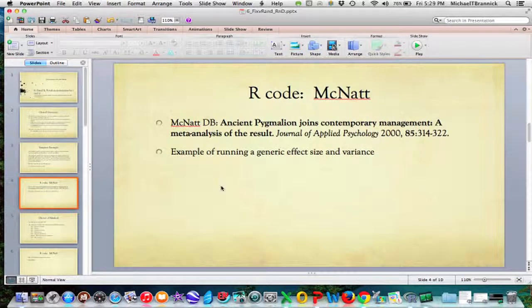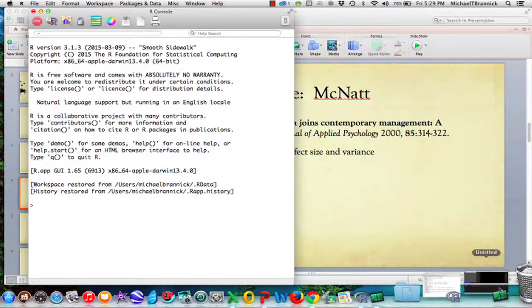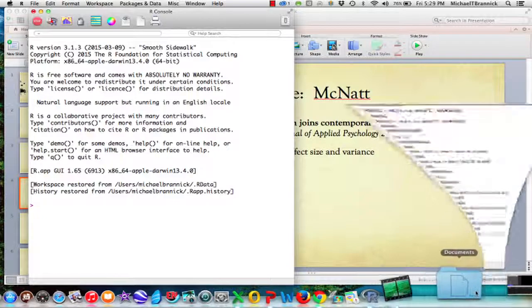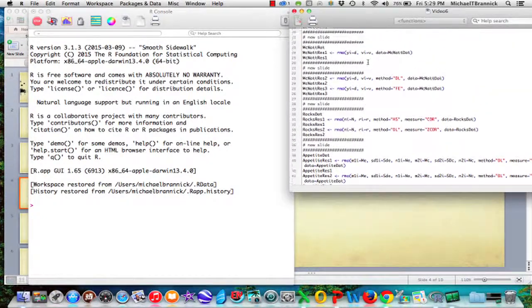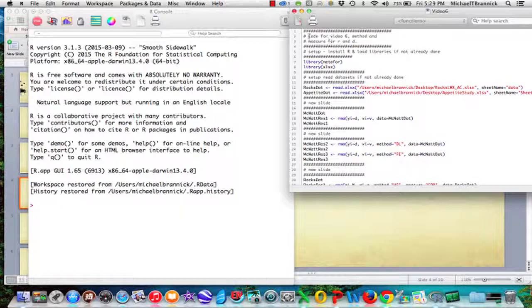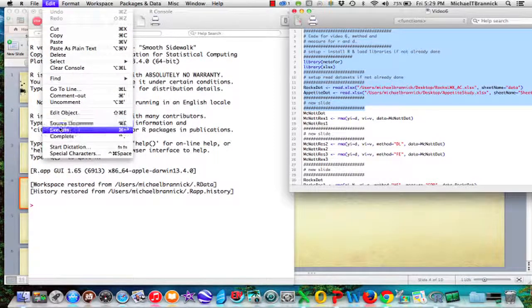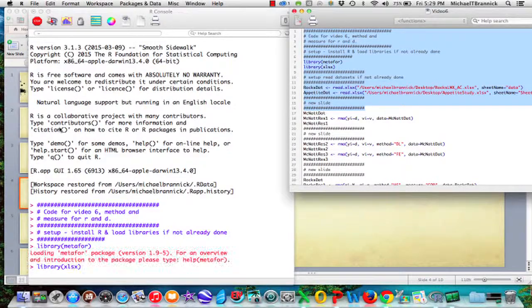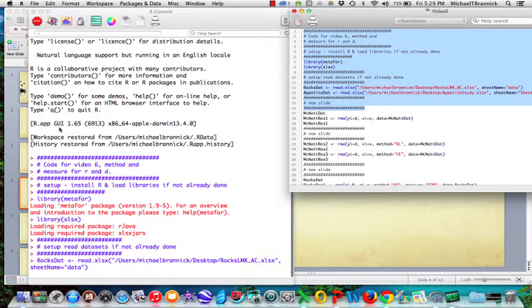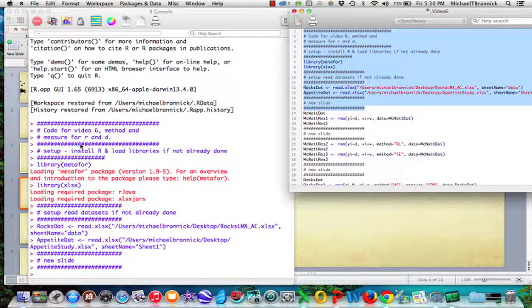I'm going to illustrate this with data from McNatt and you can see the citation there. So I'm going to call up R and run it. So here's R and I have prepared a script to run that I'm going to run in pieces and then talk about what each piece means. So edit, execute. Okay, so R is working away.